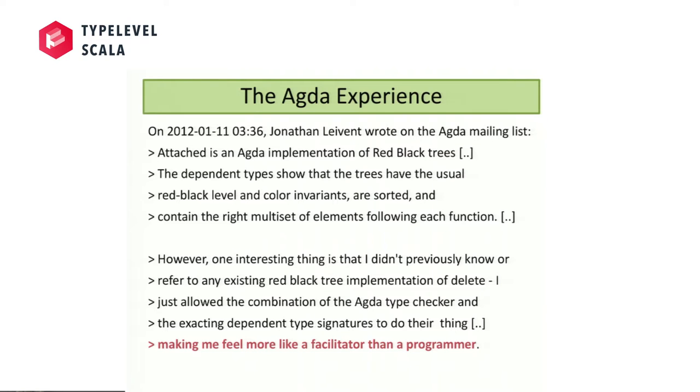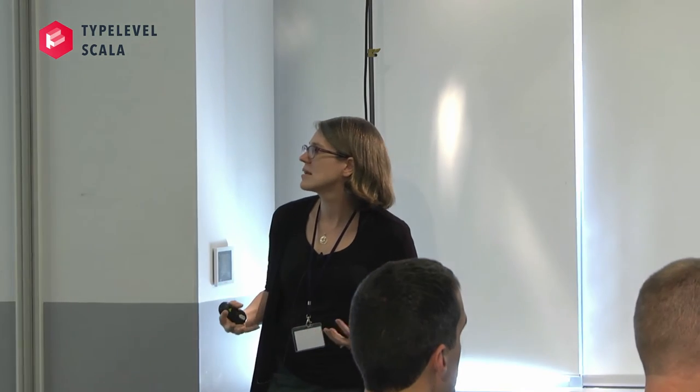Agda is a dependently typed programming language where you can use the type system to express invariants. Jonathan talked about his experience using dependent types in Agda to express invariants in a red-black tree. A red-black tree is a balanced binary search tree with invariants about red and black nodes — red nodes can have black children, black nodes can have any kind of children — and invariants about the black heights along every path, guaranteeing the tree stays balanced. He wrote those invariants into the type of his red-black tree and implemented all operations so they satisfied those invariants. He found that really directed his development process.